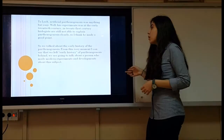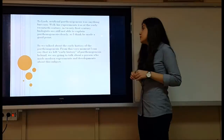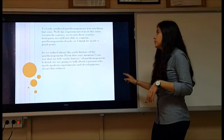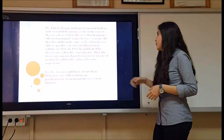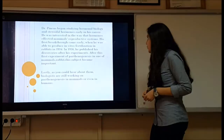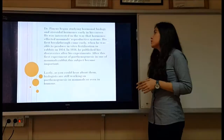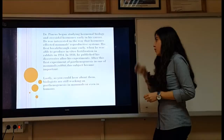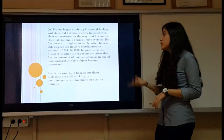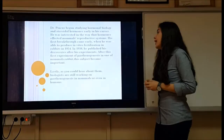Moving from the early history of parthenogenesis, the person who made modern experiments and developments in this subject is Gregory Goodwin Pincus. Dr. Pincus studied hormonal biology and steroidal hormones early in his career and was interested in how hormones affected mammals' reproductive systems. His first breakthrough came in 1934, when he was able to produce in vitro parthenogenesis in rabbits. In 1936, he published his discoveries. After this first experiment of parthenogenesis in a mammal, the subject became very important.